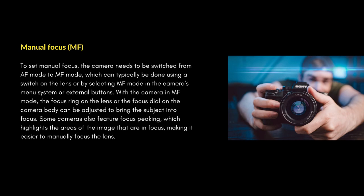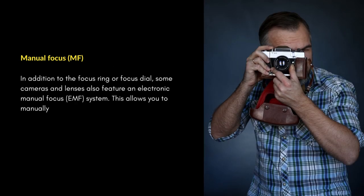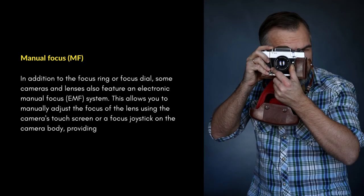With the camera in manual mode, the focus ring on the lens or the focus dial on the camera body can be adjusted to bring the subject into focus. Some cameras also feature focus peaking, which highlights the areas of the image that are in focus, making it easier to manually focus the lens.